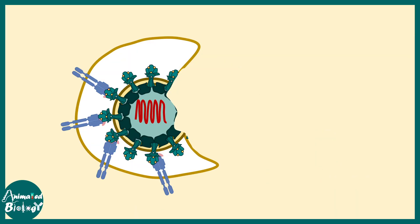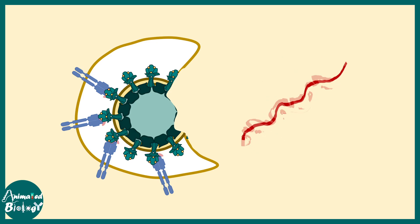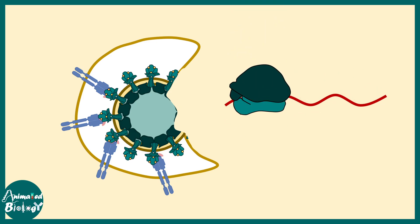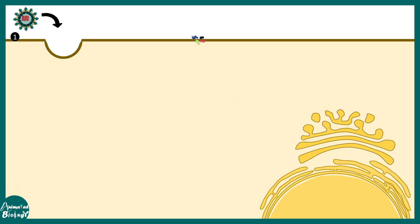After endocytosis it would dock with the endosome and release its genetic material into the cytoplasm. This genetic material released in the cytoplasm would be translated for several immediate early proteins that would be utilized for RNA replication. This is an overview of the viral life cycle inside the host cell.